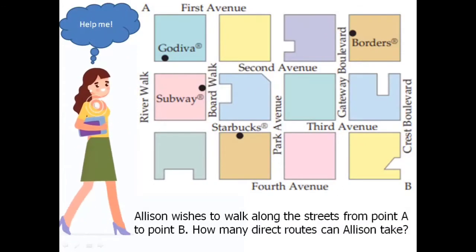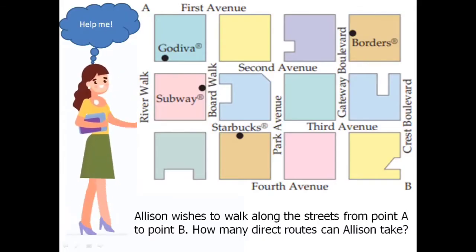Hi, this is Allison. Allison wishes to walk along the streets from point A to point B. How many direct routes can Allison take?